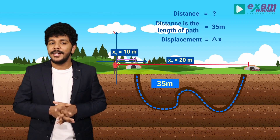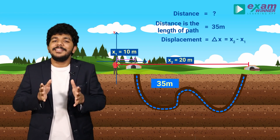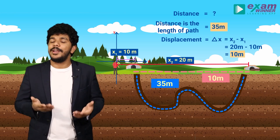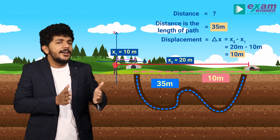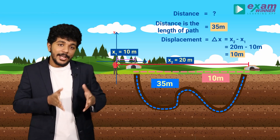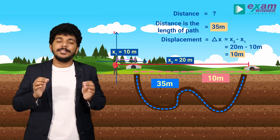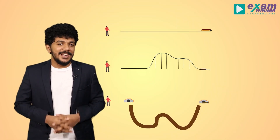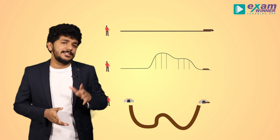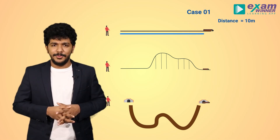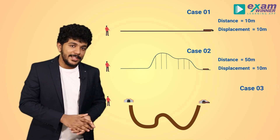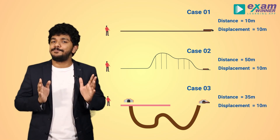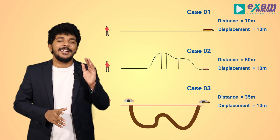The displacement is still the final position minus the initial position: x2 minus x1 equals 10 meters. The displacement delta x is equal to 10 meters in all cases. So whether the distance is 10 meters, 50 meters, or 35 meters, the displacement remains the same — 10 meters — because the initial and final positions are the same.